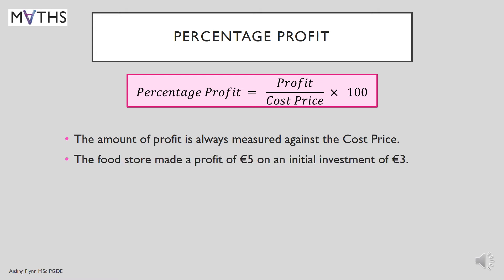For example, the food store made a profit of €5 on an initial investment of €3. So you put 5 over 3 — you made €5 on 3. Multiply by 100 to convert that fraction to a percentage. They made 166.7% profit on the pie, which would be considered very good.